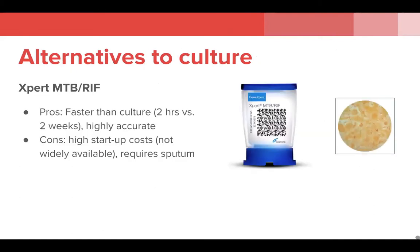The most notable alternative to culture diagnosis is the expert MTB-RIF assay, which is a gene assay that relies on PCR to detect genetic material of TB. It's significantly faster than culture, taking around two hours compared to two weeks, and has a sensitivity and specificity approaching that of culture. However, the high startup costs mean it isn't widely available in developing countries, and a recent study found that only about 4% of cases are diagnosed this way when it comes to HIV and TB co-infection.